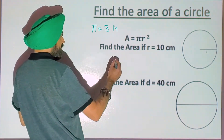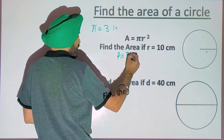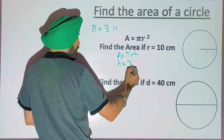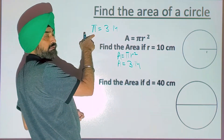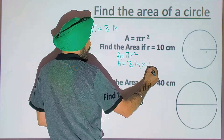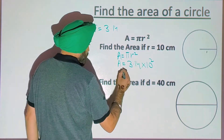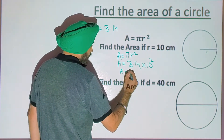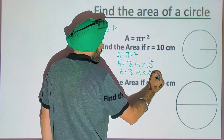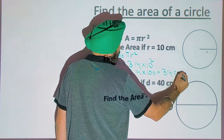So to find the area, we know the formula is pi r squared. A is equal to pi, which is 3.14 — I already wrote it here — times r squared. R is 10, so write 10; don't forget to square it because it is r squared. Now you can multiply and find the product. 10 squared means 100.